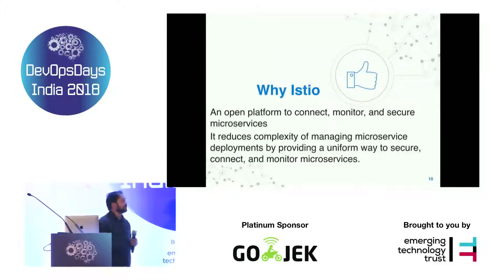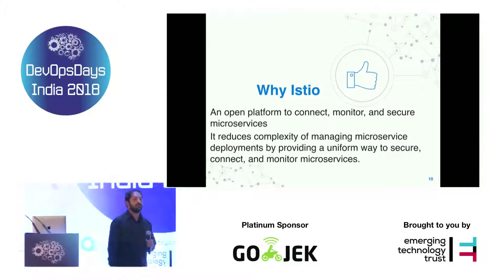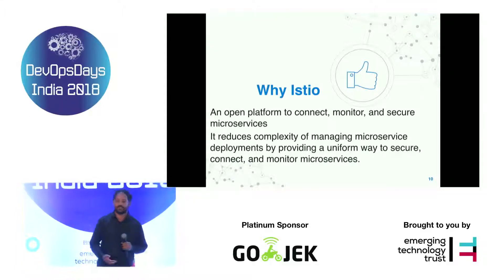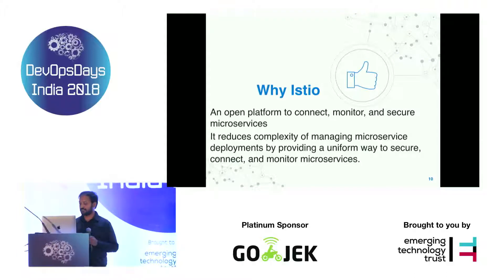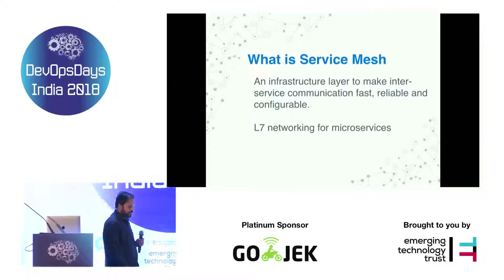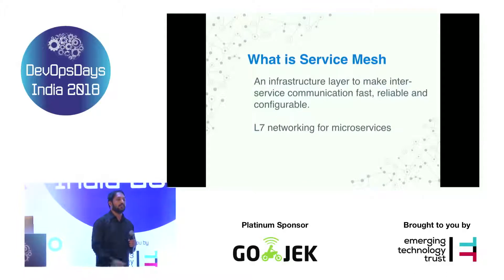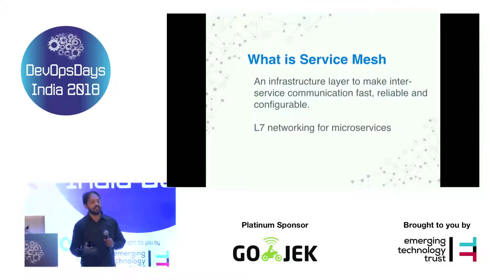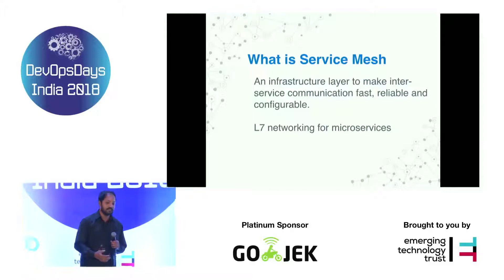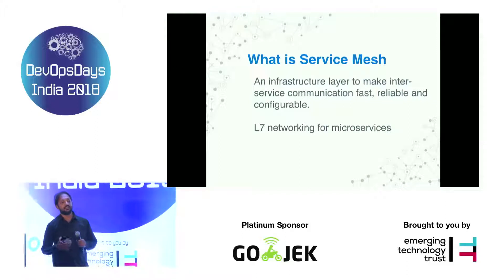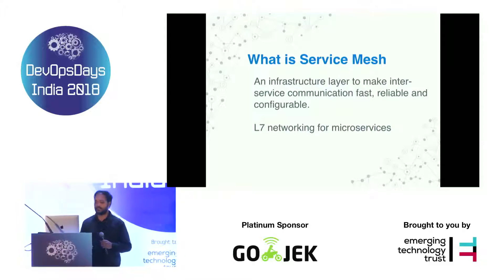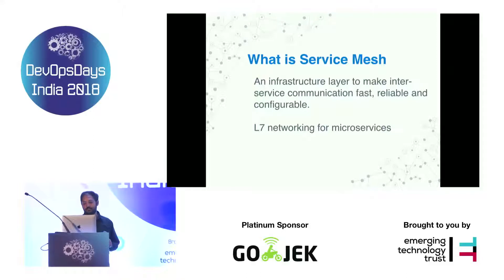Why Istio? It mainly reduces the complexity of managing microservices for controlling, securing, and monitoring. And what is a service mesh? When an application is broken up and discretized into multiple microservices, how these services interact with each other is the service mesh. It mainly runs on layer 7 networking for microservices.